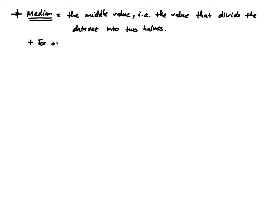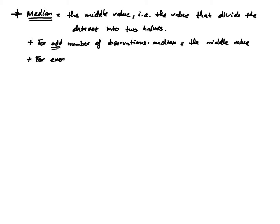For a data set with an odd number of observations, the median is literally the middle value. For a data set with an even number of observations, the median is the average of the two middle values.